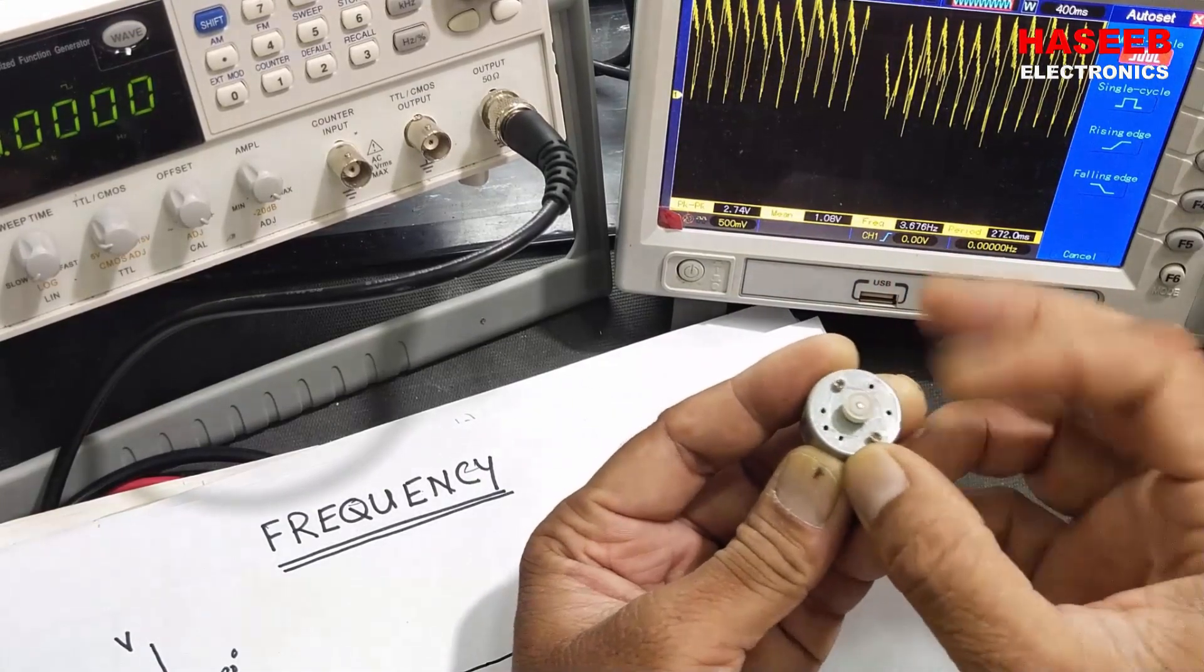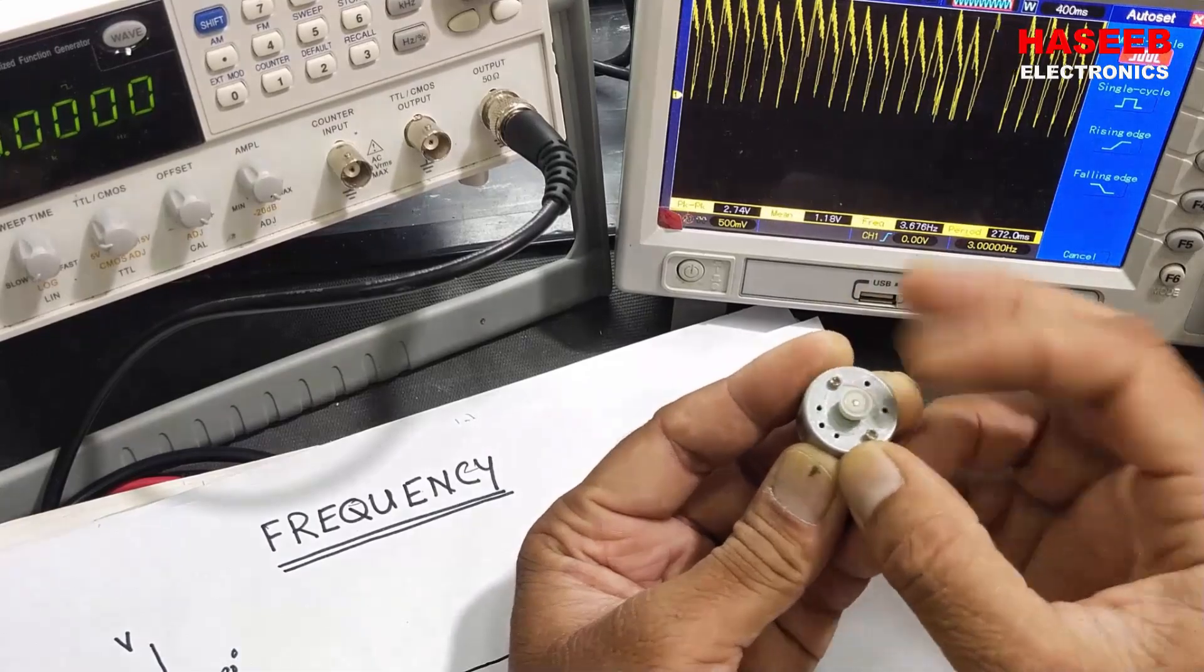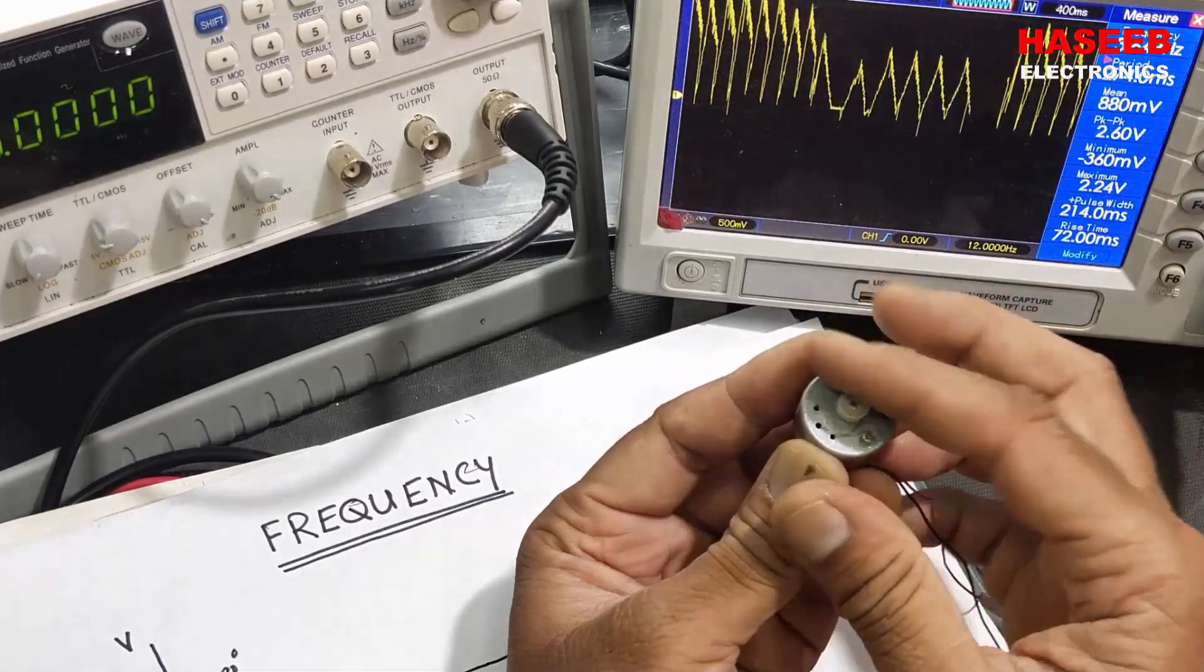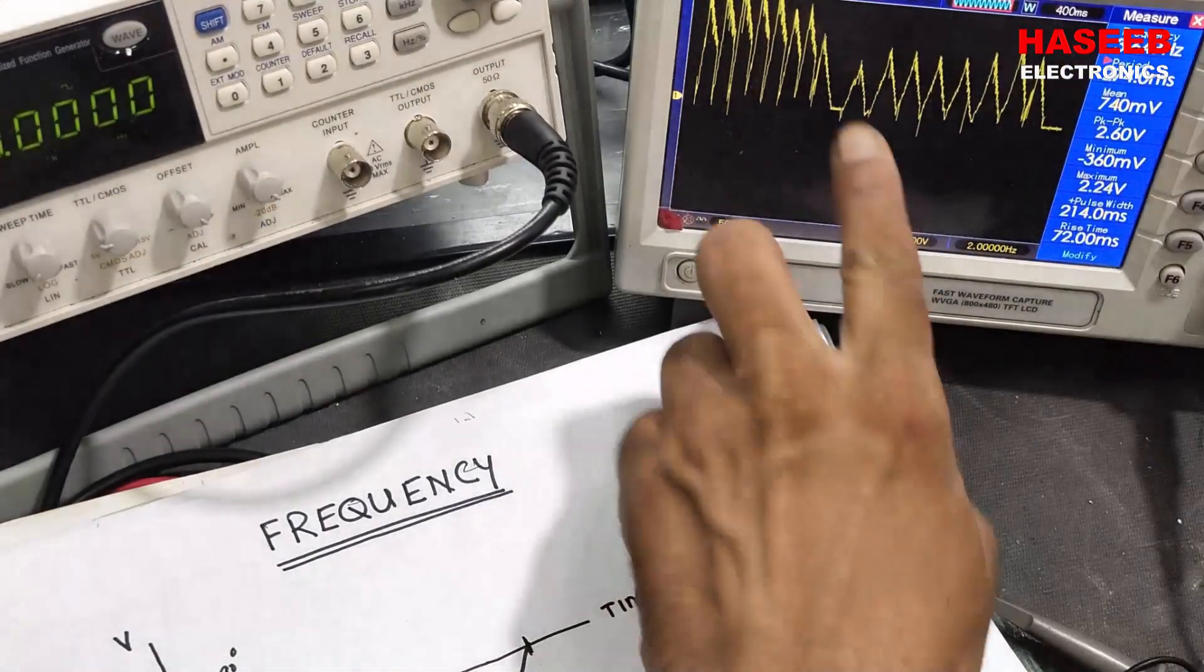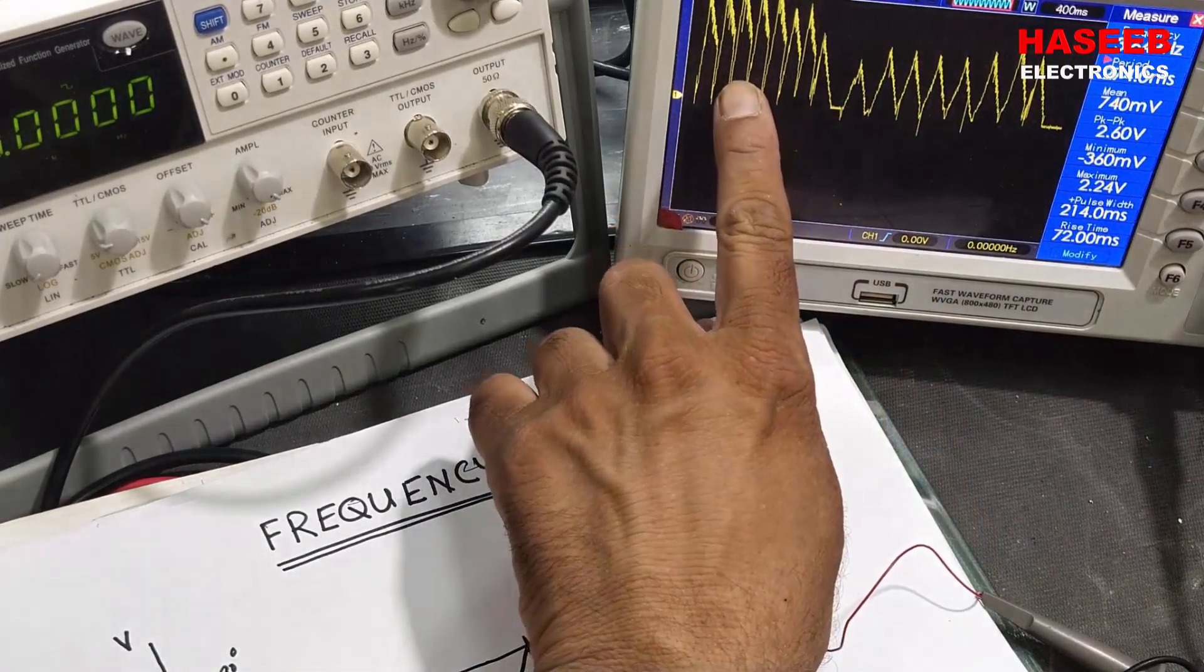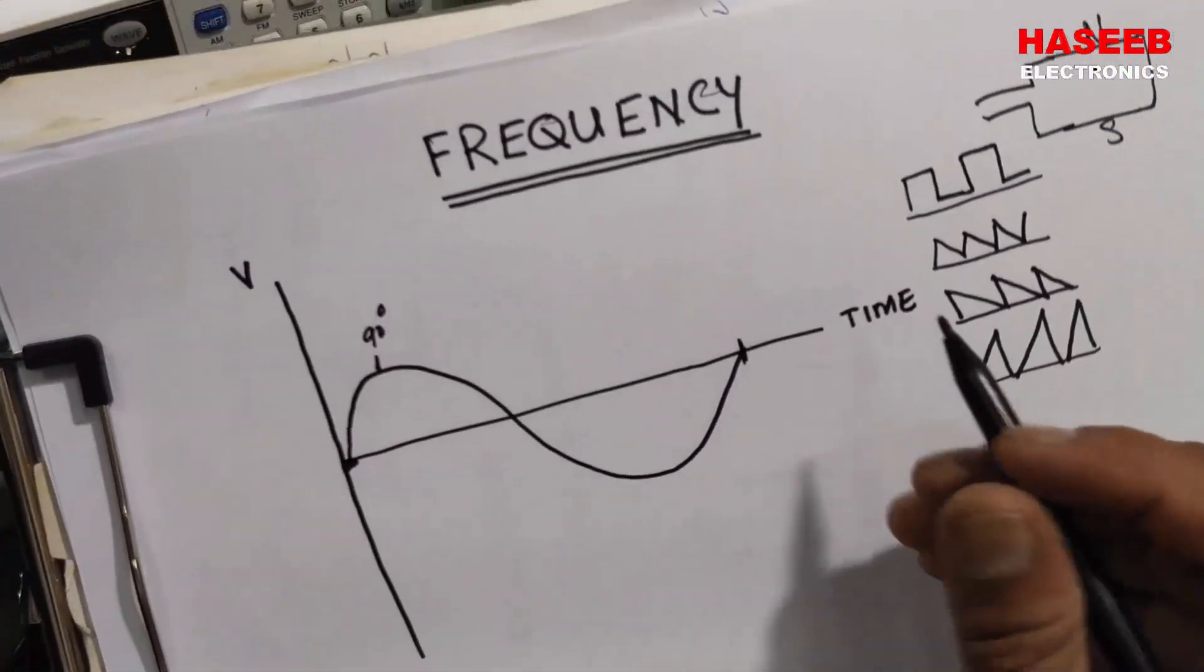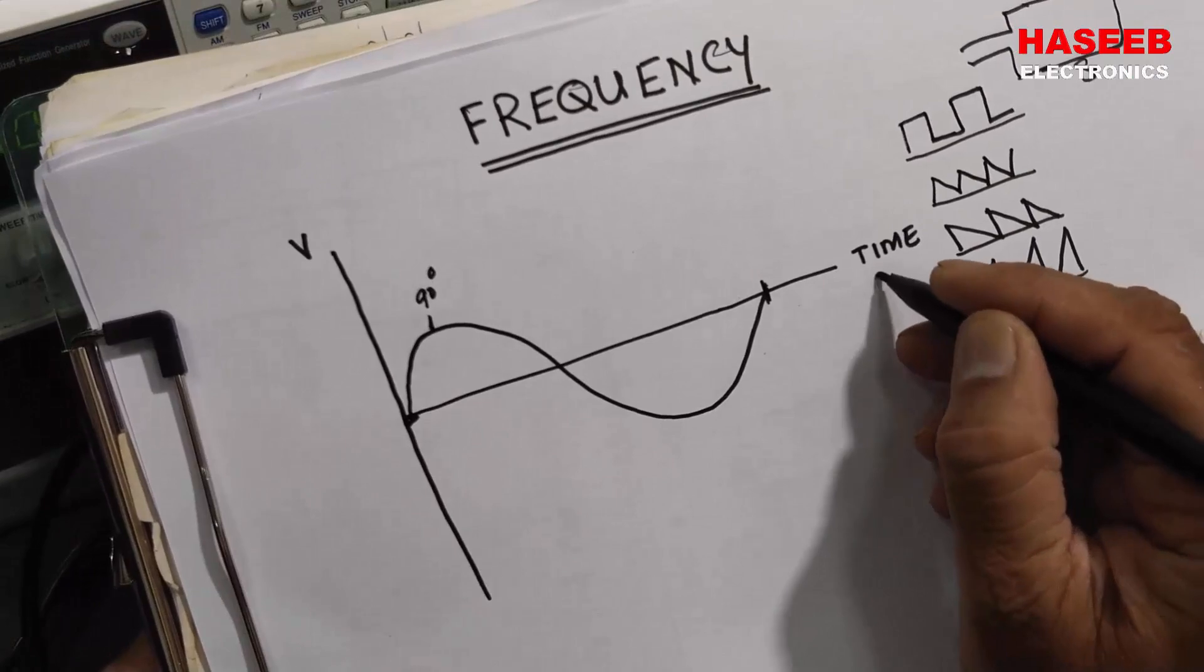So the rotor is spinning many times in one second. If I will spin it slowly, we can see the time difference between these pulses. If we divide this time in seconds...